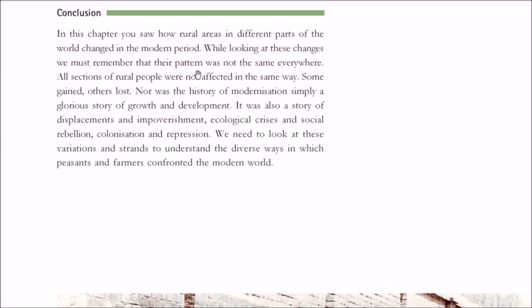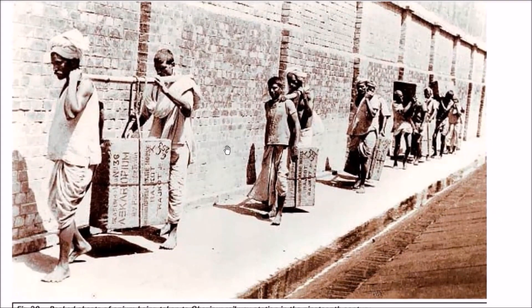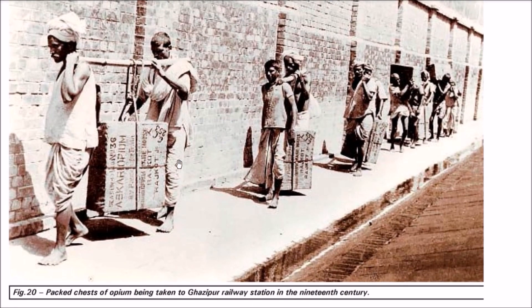In conclusion, we discussed England, USA, and India. The pattern was changing — somewhere there were new machines, and somewhere it was trade that influenced which new crops were being grown and how colonial rulers affected peasants and farmers and how they reacted. The lesson ends with a picture of packed chests of opium being taken to Ghazipur Railway Station in the 19th century.